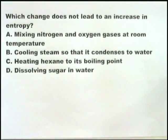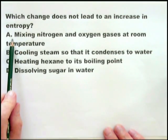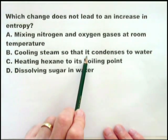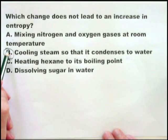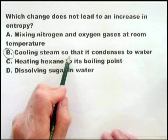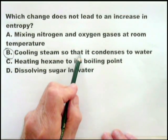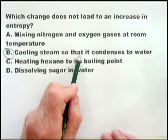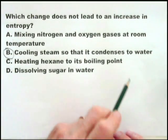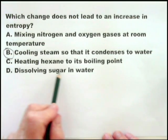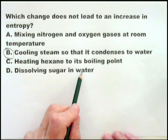In this case, we're looking for something that does not lead to an increase in entropy. Mixing nitrogen and oxygen gases at room temperature does lead to an increase in entropy. Cooling steam so that it condenses to water — immediately we see that is not an increase in entropy, that is a reduction in entropy, because the cooling steam brings together the molecules of water so that they are closer together and more ordered in the form of water than in the form of steam. Heating hexane to its boiling point is an increase in entropy. Dissolving sugar in water, just like dissolving sodium chloride in water, is an increase in entropy.